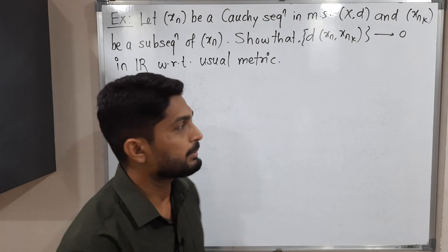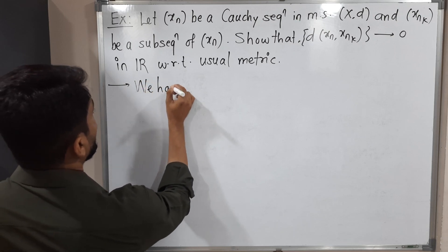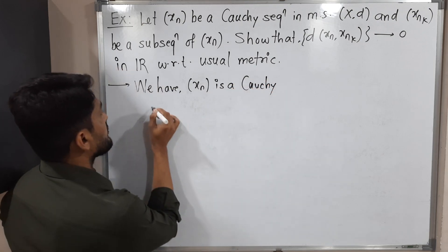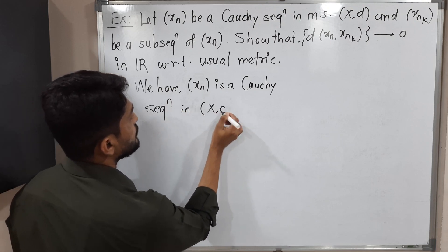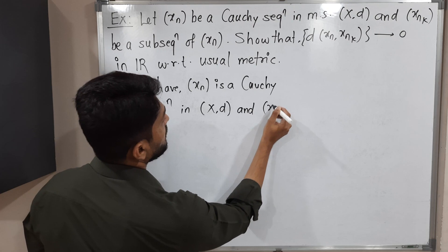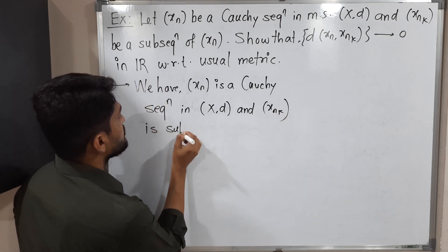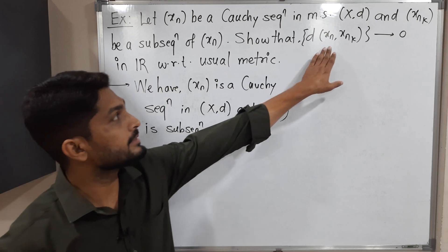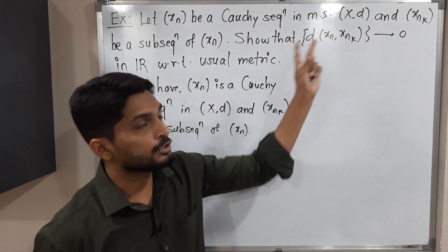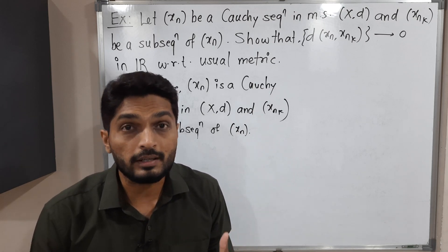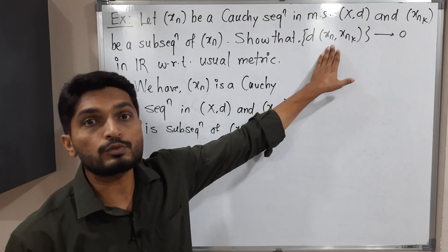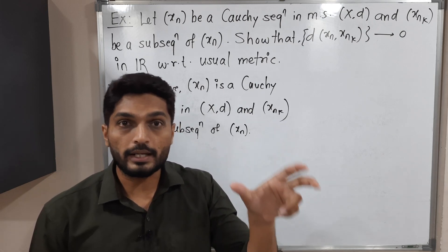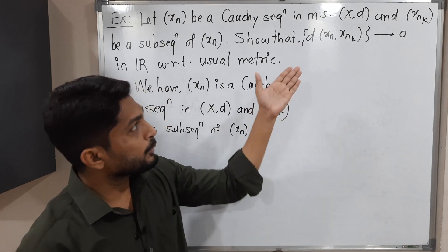Let us start with the given information. We have: xn is a Cauchy sequence in metric space (X, d). The second piece of information is that xnk is any subsequence of xn. We have to prove that the sequence d(xn, xnk) — that means distance between two terms — is a real number, and we need to show this sequence of real numbers converges to 0 in ℝ with the usual metric du, where du = |x - y|.